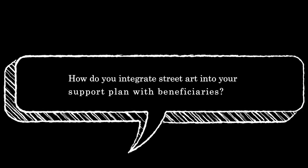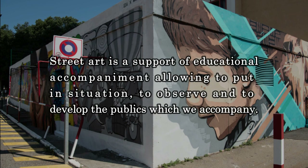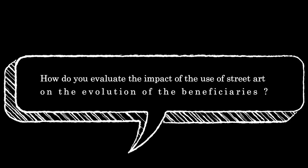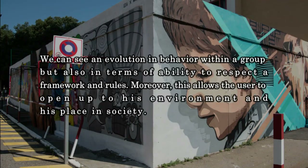How do you integrate street art into your support plan with beneficiaries? Street art is a support of educational accompaniment allowing to put beneficiaries in situation, to observe and to develop those we accompany. How do you evaluate the impact of street art on the evolution of beneficiaries? We can see an evolution in behavior within a group, but also in terms of ability to respect a framework and rules. Moreover, this allows the user to open up to their environment and their place in society.